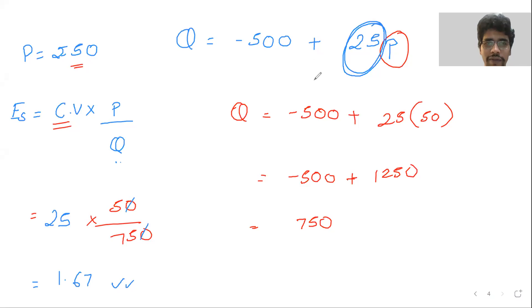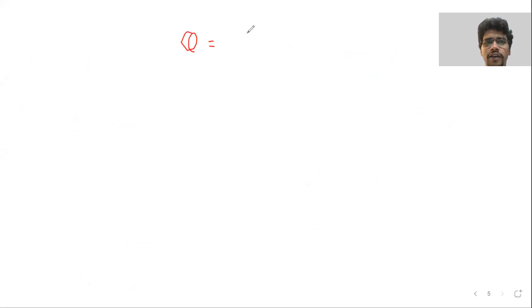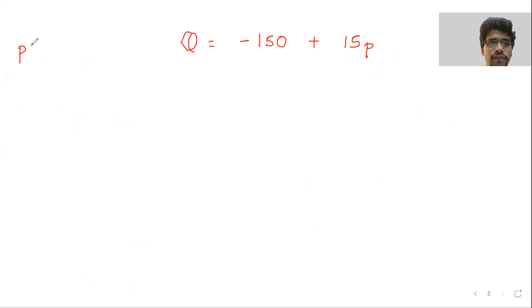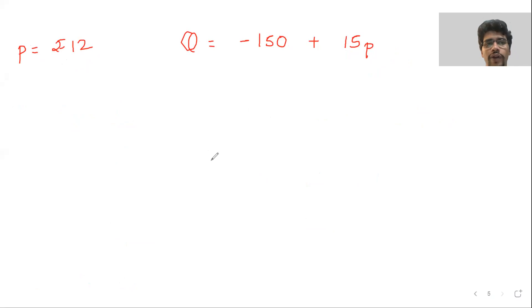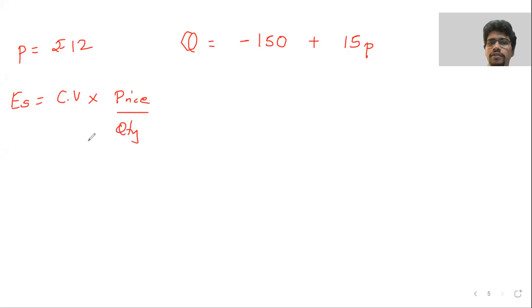Let me give one more question — you solve it yourself, I won't help. Q = -150 + 15P, and price is rupees 12. The formula is: coefficient variable into price upon quantity. First, find Q.